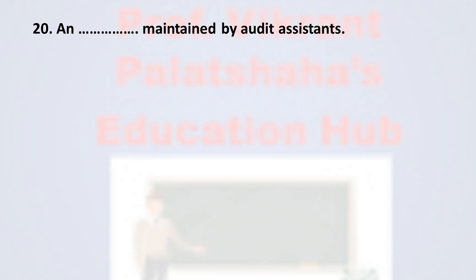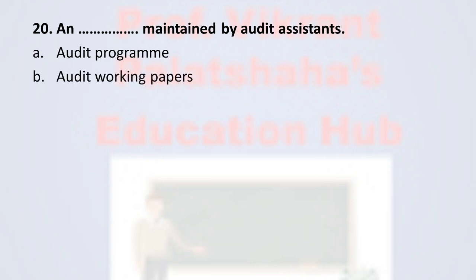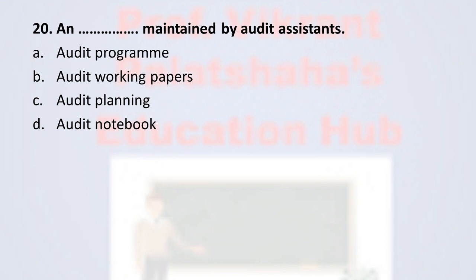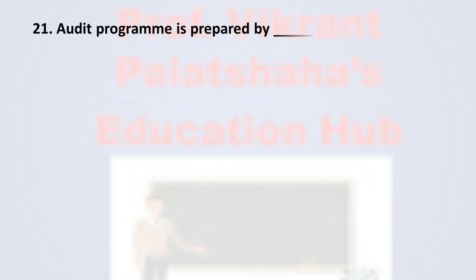Question number twenty: this is maintained by the audit assistant. Option A audit program, option B audit working papers, option C audit planning, and option D audit notebook. The correct option is option D, audit notebook.